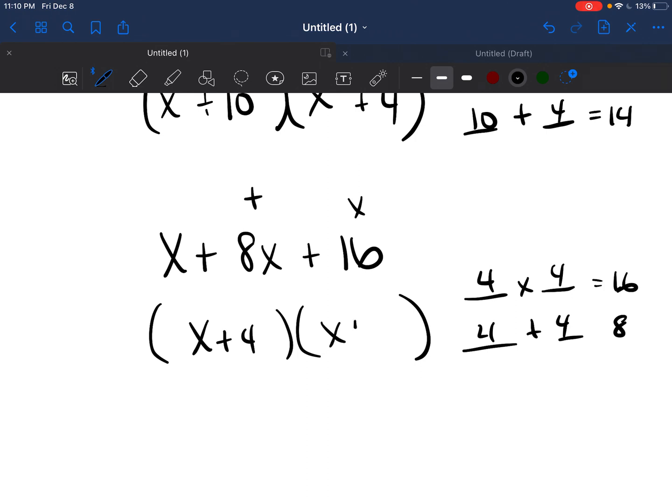So it would be x plus 4, x plus 4. Remember, the trick is those two numbers are added and then multiplied. 4 plus 4 is the middle number. 4 times 4 is the last number. And the x squared broken down is just x and x.